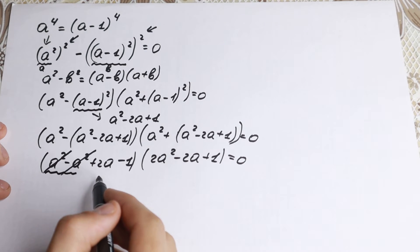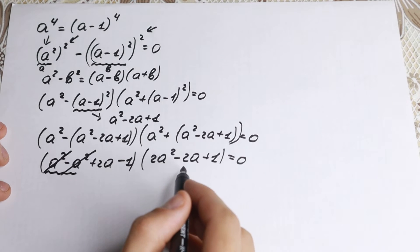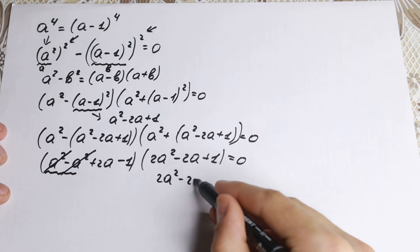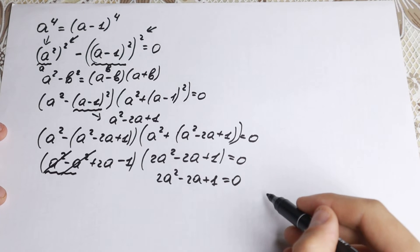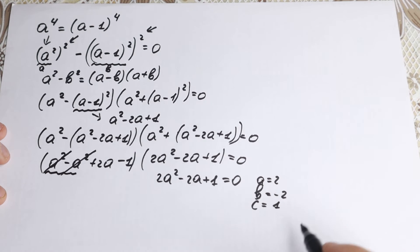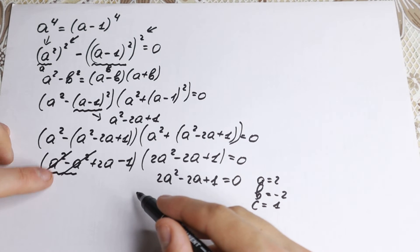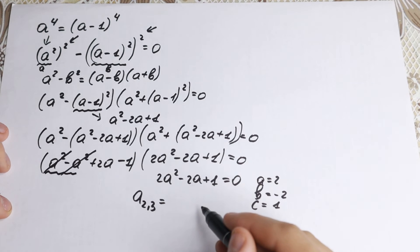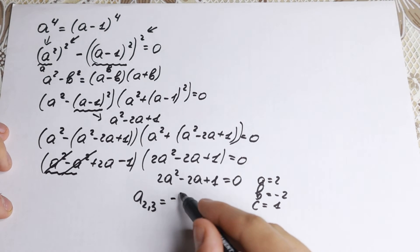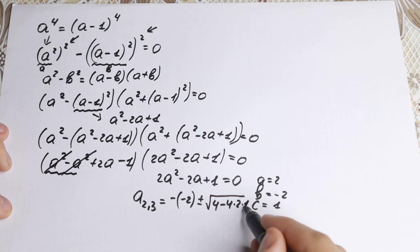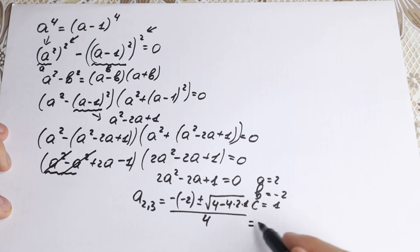We have a product of two parentheses equal to zero. For the first factor: 2a minus one equals zero, giving a equals one half. For the second factor, we solve the quadratic 2a-squared minus 2a plus one equals zero using the quadratic formula. We have a = 2, b = -2, and c = 1. So the roots are: a equals minus b plus-or-minus square root of b-squared minus 4ac, all over 2a, which is all over four.